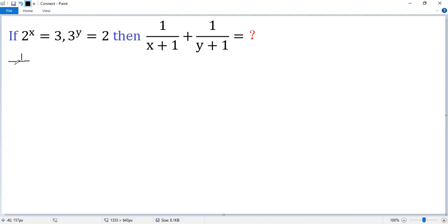1 over x plus 1 plus 1 over y plus 1. We know the common denominator is x plus 1 times y plus 1. So the top of the first fraction becomes y plus 1. The second fraction, so x plus 1 times y plus 1.